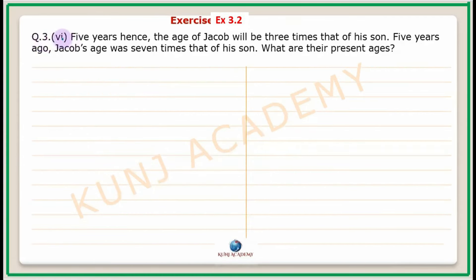Question 3, sixth part. Five years hence, the age of Jacob will be 3 times that of his son. Five years ago, Jacob's age was 7 times that of his son.